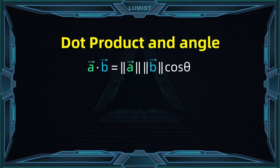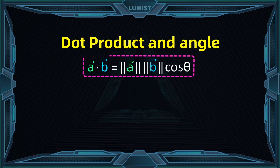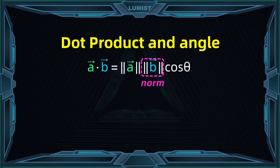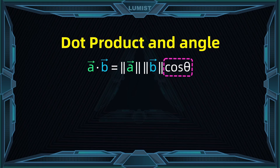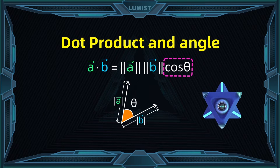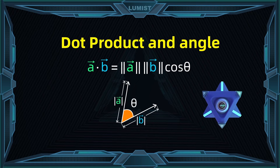The importance of the dot product is that it gives us information about the angle formed by the two vectors, and this results from the formula: a dot b equals the norm of vector a, multiplied by the norm of vector b, multiplied by the cosine of the angle formed by your vectors a and b. So if we have a on top and b below, the angle formed between them we call theta. This is another way to represent the dot product.